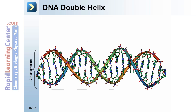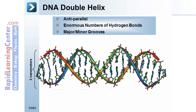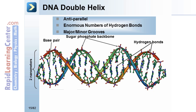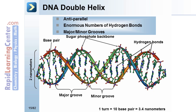DNA double helix. The DNA double helix is approximately two nanometers in diameter and the strands are anti-parallel. The base pairing is internal; the sugar-phosphate groups make up the backbones. Hydrogen bonds occur between the base pairs, with an enormous number holding the anti-parallel strands together. The DNA double helix also consists of a major groove and a minor groove; one turn of the double helix equals ten base pairs, approximately 3.4 nanometers.